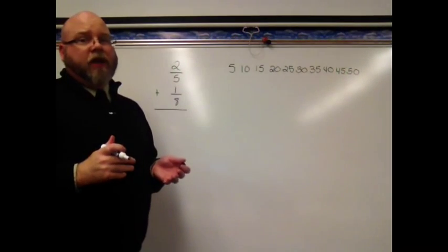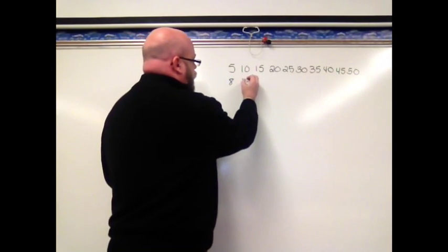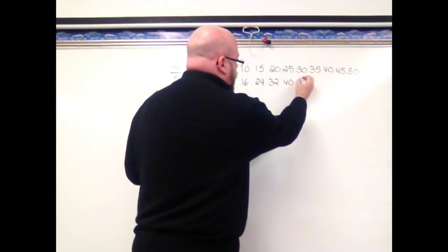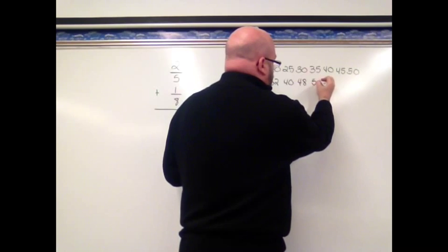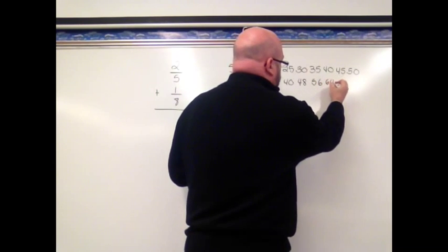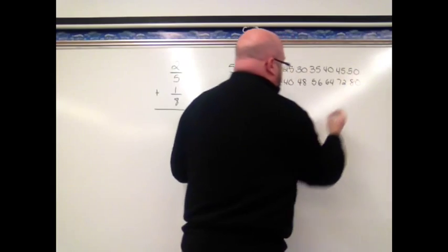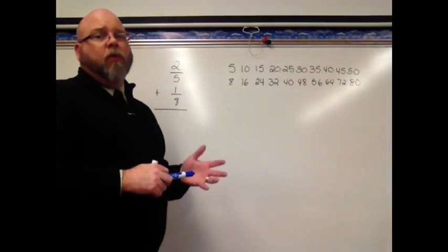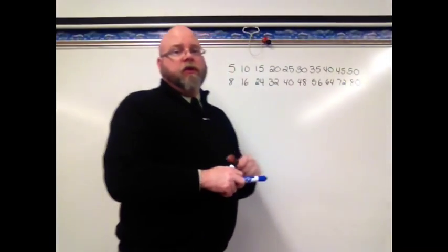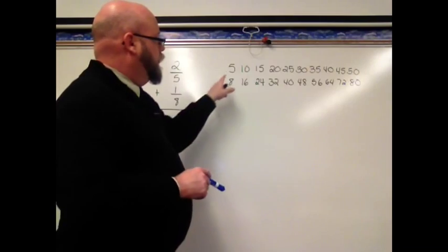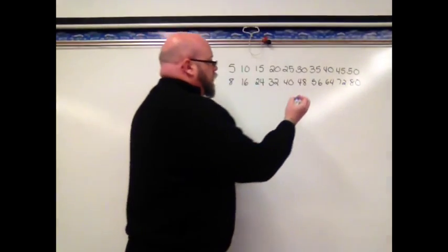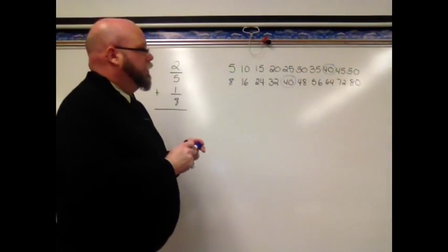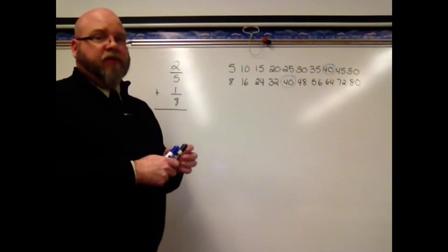Then, I'm going to count by 8s. 8, 16, 24, 32, 40, 48, 56, 64, 72, and 80. Now that I've counted by 5s and 8s, I'm going to look for what multiples do 5 and 8 have in common. Well, the one I see on this particular list is 40.